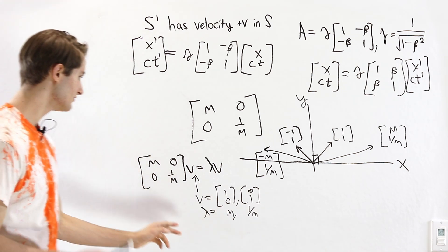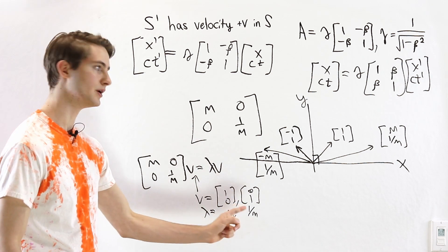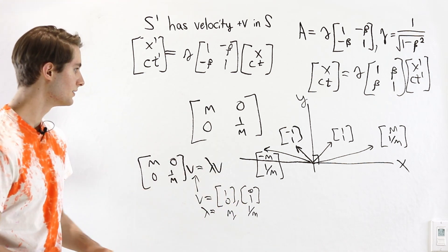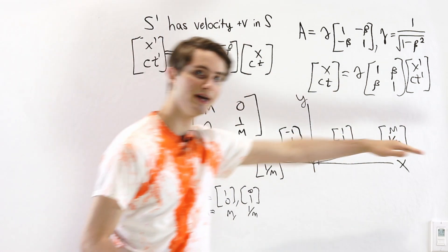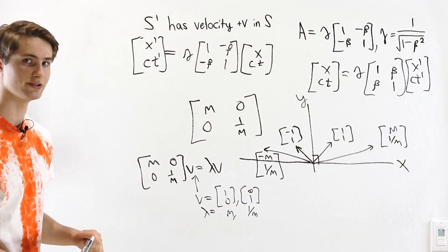So we have these two eigenvectors, 1, 0 and 0, 1, of our matrix. And we see that they're at a 90 degree angle to each other. 1, 0 is along the x-axis, 0, 1 is along the y-axis.